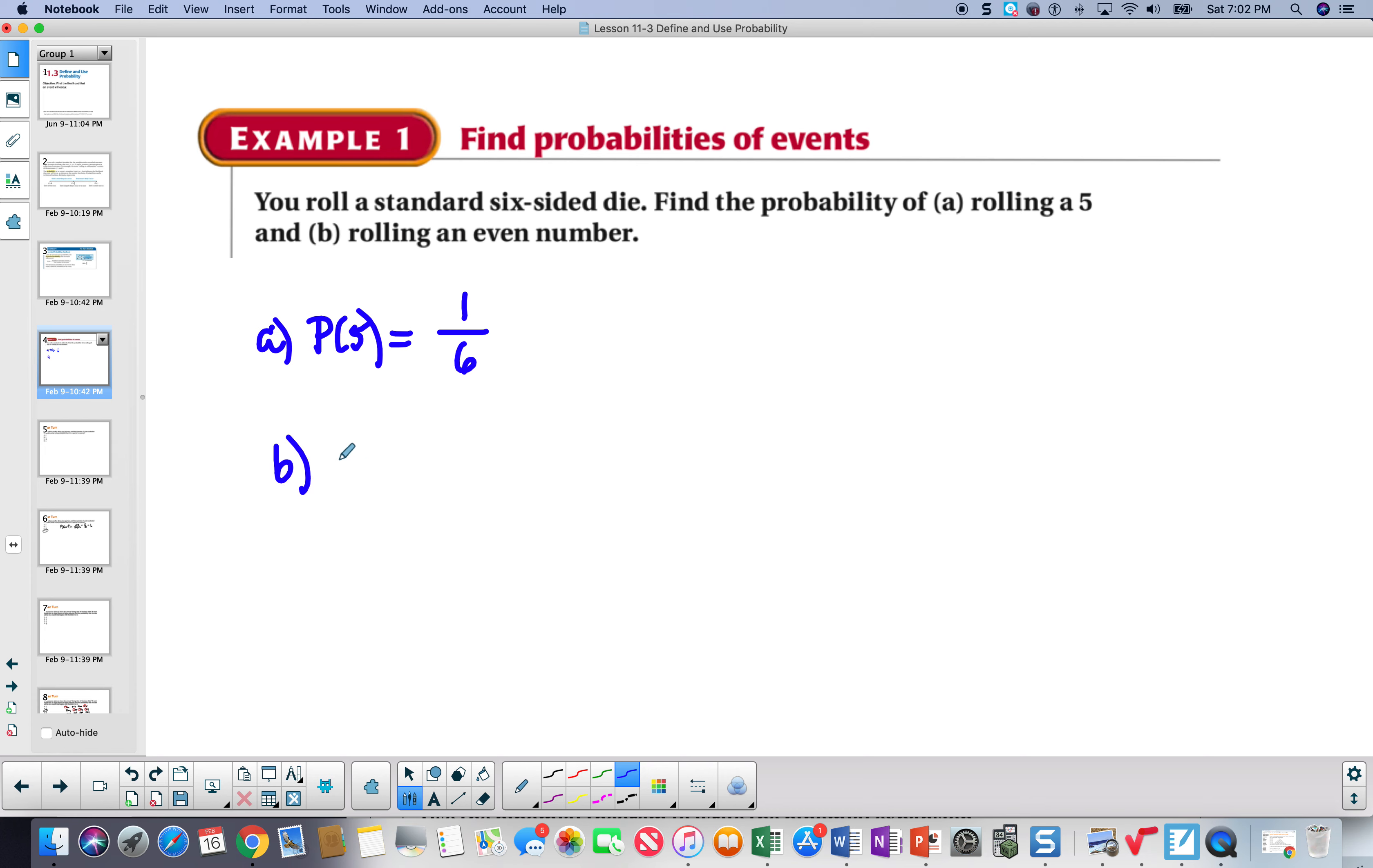We can leave that as a fraction. The probability of rolling an even number, which is 2, 4, or 6, the probability of that, there are 3 favorable events out of 6. So we say the probability is 1 half.